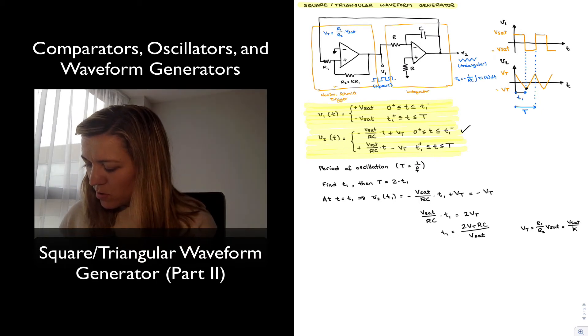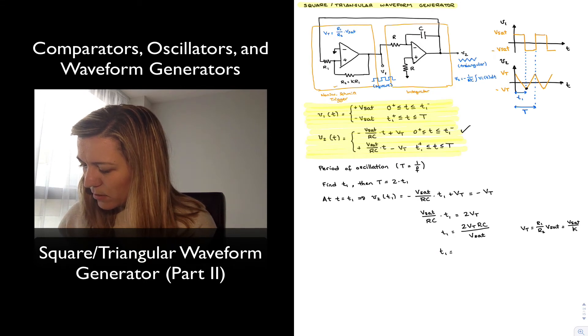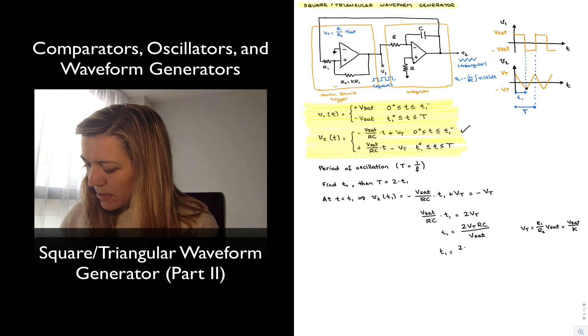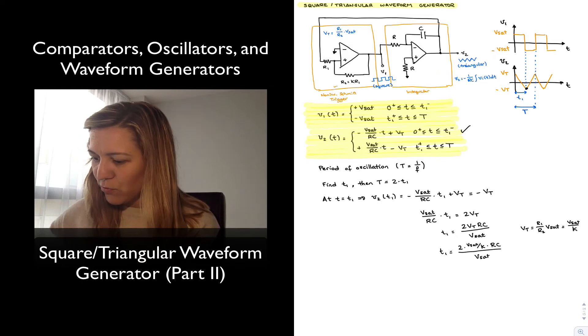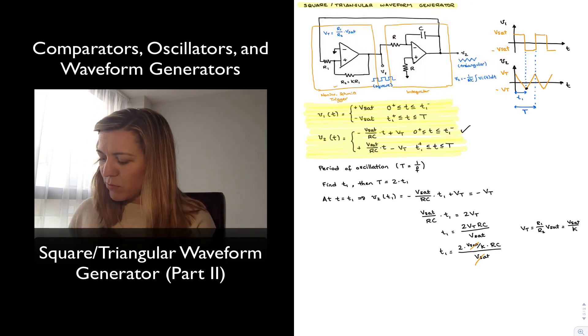My T1 now becomes equal to 2 times vSat divided by K, times RC divided by vSat. My saturation voltages in the numerator and denominator are going to cancel out, and so I'm left with that expression.